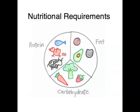Heterotrophs also need vitamins and minerals. Mammals actually need to consume 13 different types of vitamins and 20 different minerals. If animals don't get their nutritional requirements, they can actually get a deficiency disease — some sort of nutritional deficiency disease.